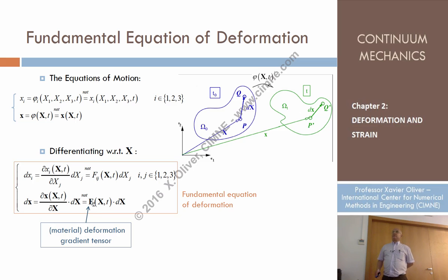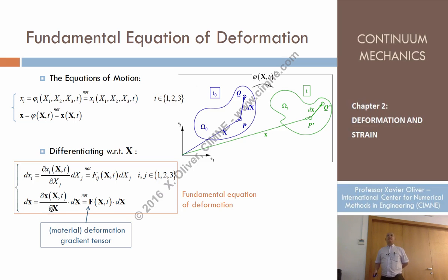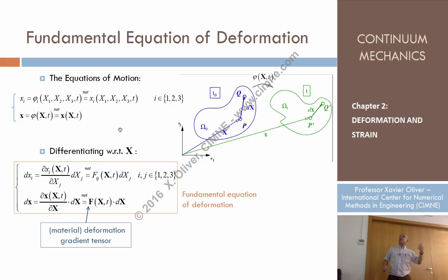This tensor defines the fundamental equation of deformation. What is differential of x? That vector. What is differential of capital X? That vector. This equation says that differential of small x — the relative position of two particles at time t — can be computed by multiplying a second-order tensor F, whose components are the specific derivatives of the equations of motion with respect to material coordinates, times the relative position at the reference configuration.